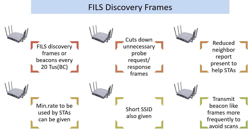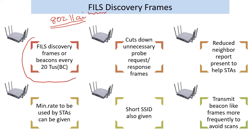FILS Discovery Frames — FILS stands for Fast Initial Link Setup — comes from an IEEE standard called 802.11ai. It was originally introduced to make sure that initial entry into networks could be much faster, and that includes transmitting a beacon-like frame much more often than every 100 milliseconds or so. The FILS Discovery Frames are roughly agreed to come about 20 milliseconds apart, and the intention is to avoid unnecessary probing. These frames can also contain RNR information, helping cut down airtime wastage seen in 2.4 and 5 gigahertz and hopefully making 6 gigahertz a lot cleaner.